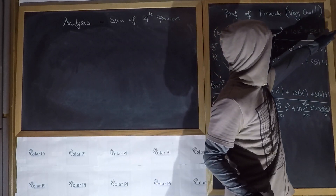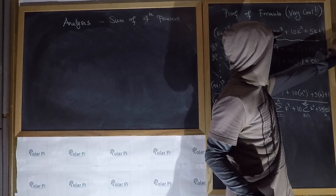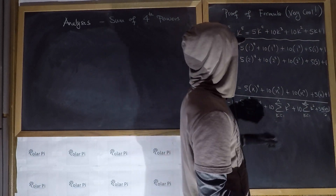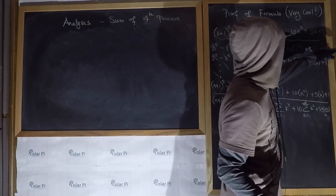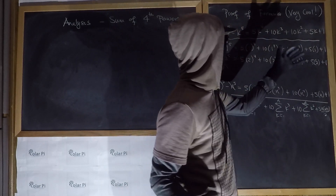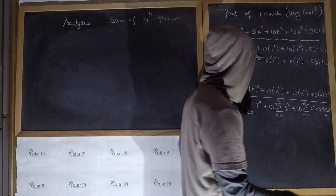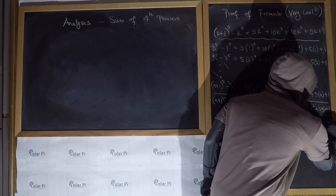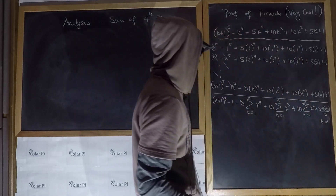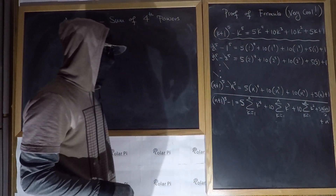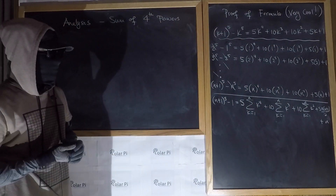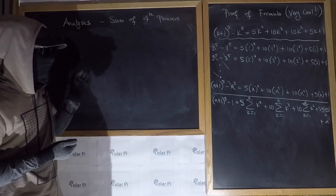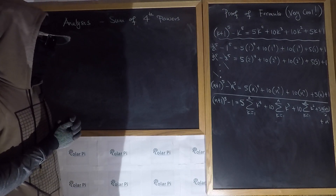And of course at the very end we have 1 plus 1 plus 1 plus 1 all the way — that's n ones, so that's n. Obviously I was running out of space, so let's come over here where we have space.